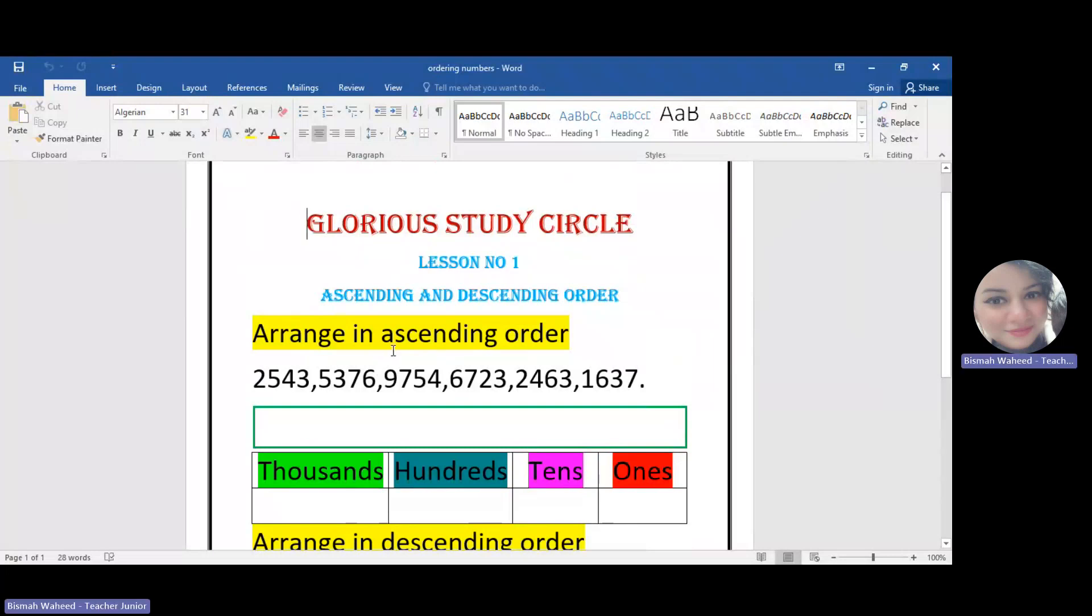That means in ascending order, we have to arrange the numbers from smallest to biggest because we are moving from the smallest to upward, like we are moving upward towards the greater numbers.